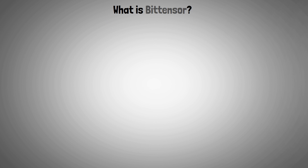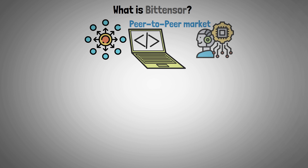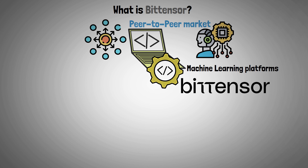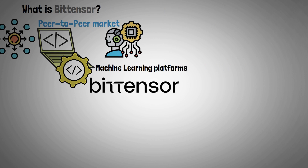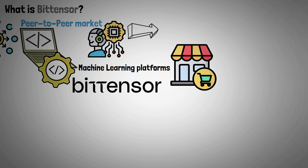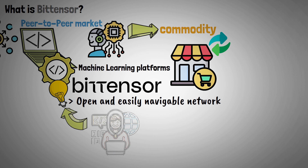So let's start with what is BitTensor. By decentralizing the procedure and establishing a peer-to-peer market for machine intelligence, BitTensor is completely transforming the creation of machine learning platforms. Knowledge can now be shared and expanded quickly with this decentralized approach. By creating a market, the BitTensor protocol turns machine intelligence into a commodity that can be traded through an open and easily navigable network, stimulating innovation from a diverse global developer community.